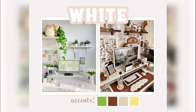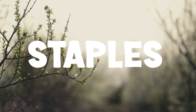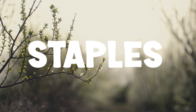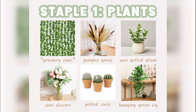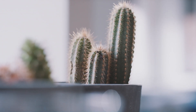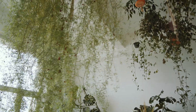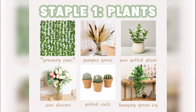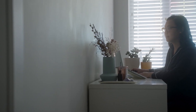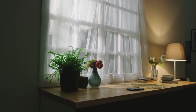If you're looking for something that really makes an impact, keep in mind you can make big contrasts with your color choices. Now we're going to dig into the staples of cottagecore gaming setup design. The first staple is plants — that includes greenery, vines, ivy garlands, pampas grass, faux potted plants, faux flowers, potted cacti, and hanging green ivy. All of this serves to make your space feel more natural and in tune with nature.